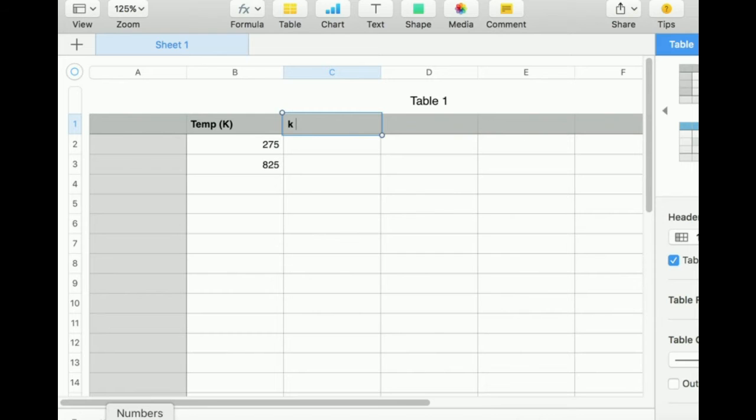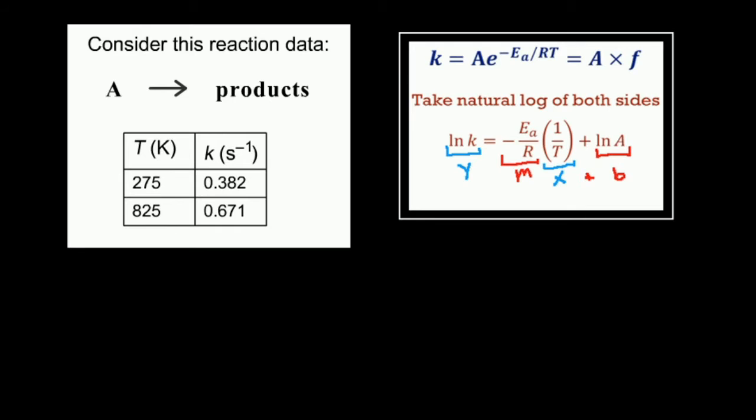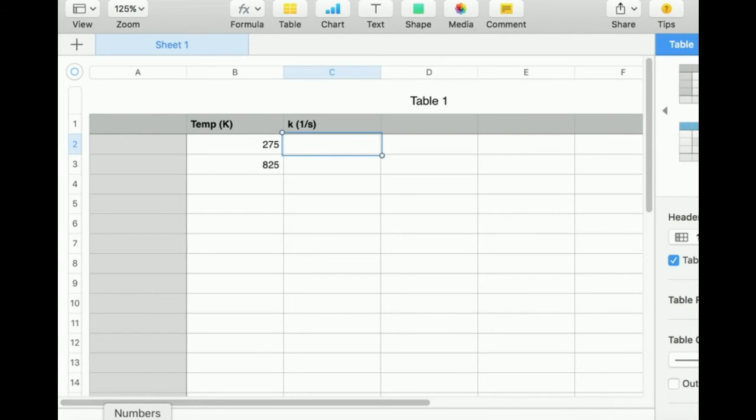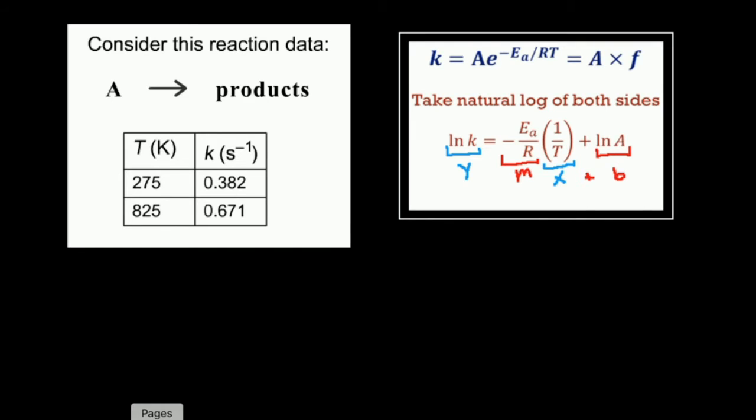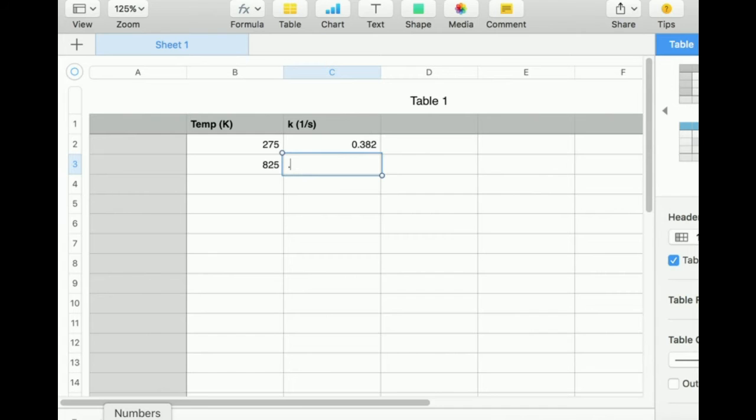Over here, these are going to be my rate constants in per second. I see my first rate constant is 0.382 and my second rate constant is 0.671.